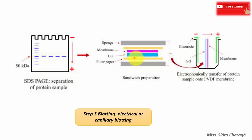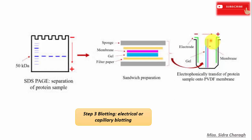Small proteins move faster than large proteins, and since the proteins are negatively charged, they move from the negative electrode to the positive electrode when electric current is applied. After gel electrophoresis, the next step is blotting. The nitrocellulose membrane is placed on the gel and separated proteins get transferred to the nitrocellulose membrane by capillary action, but this type of blotting is time-consuming and may take one to two days. For faster and more efficient transfer, electroblotting is used, where the nitrocellulose membrane is sandwiched between the gel and filter paper and electric current is applied.